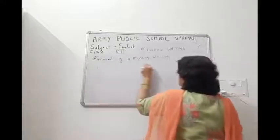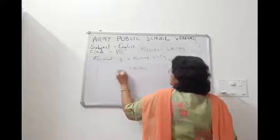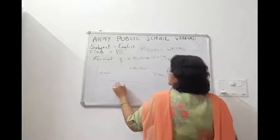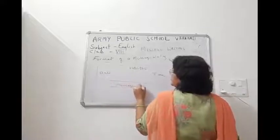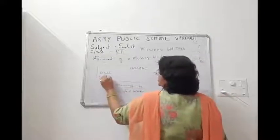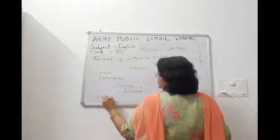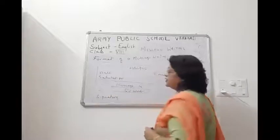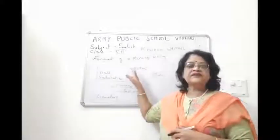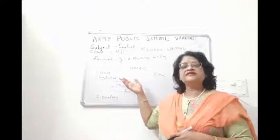You have to draw a box in the center and write 'Message' at the top. Then write the date, time, and message in 50 words. Of course, you cannot forget the salutation. This is the format of your message writing. You have to leave one line, write 'Message' in the center, then write the date and time.